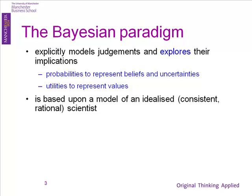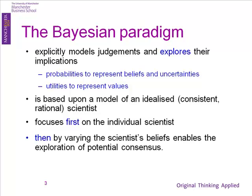It's all idealised, and you explore that scientist, and you begin to see what a group of people would do. You focus first on the individual scientist, then you vary that scientist's starting beliefs to see what consensus might be. You look at how a number of scientists looking at the same data would end up. If they end up in the same place, the data is strong and outweighs initial disagreements.